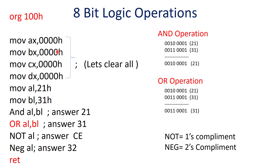Initially we have cleared all 4 registers. Then we have moved the 8-bit number 21H into the AL register and 31H into the BL register. Once you store two numbers in the two registers, you are going to perform the AND operation between AL content and BL content. This is the AND operation.